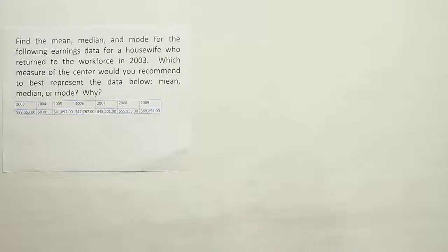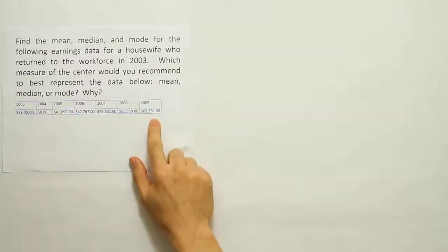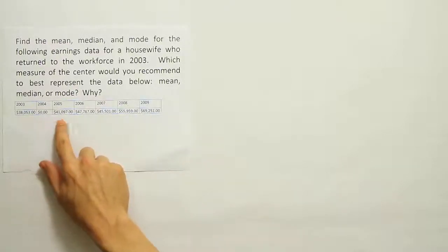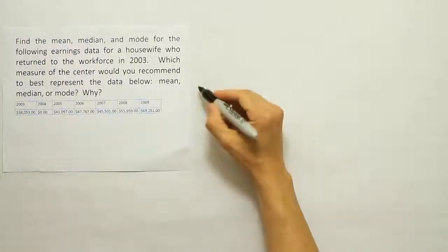In order to calculate the mean, we have to add up all these data values and divide by the number of values we have. We have one, two, three, four, five, six, seven values, so let's write that down.